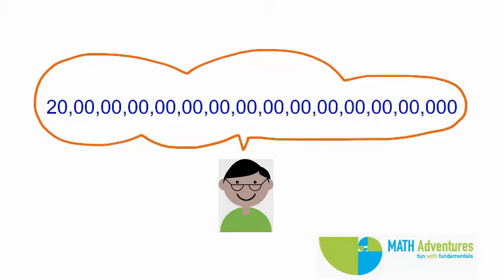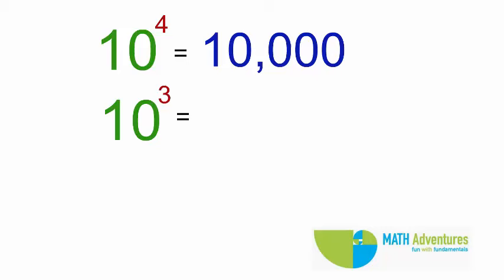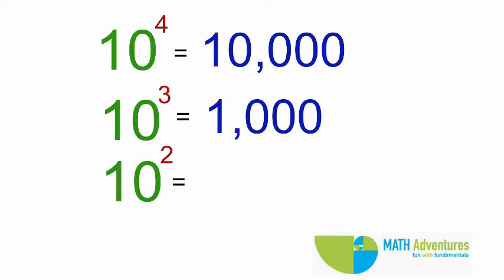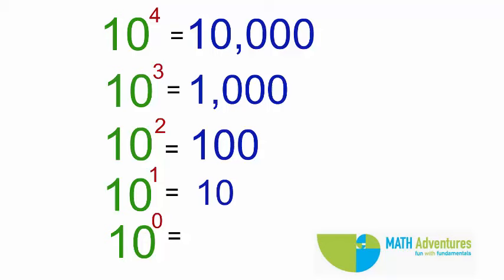Now, let us look at this pattern. 10 to the power of 4 is 10,000. 10 cubed is 1000. 10 squared is 100. 10 to the power of 1 is 10.